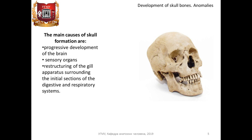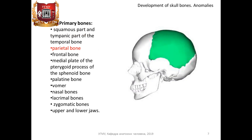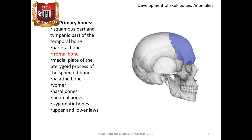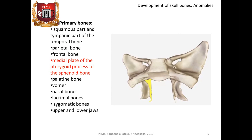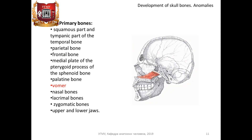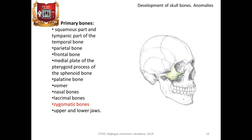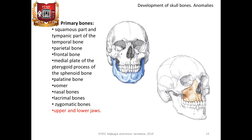By origin, all bones of the skull are divided into primary, arising from connective tissue without the cartilage stage, and secondary, arising from the cartilage model of the bone. Primary bones include: squamous part of the temporal bone, parietal bone, frontal bone, medial plate of the pterygoid process of the sphenoid bone, palatine bone, vomer, nasal bones, lacrimal bones, zygomatic bones, and upper and lower jaws.